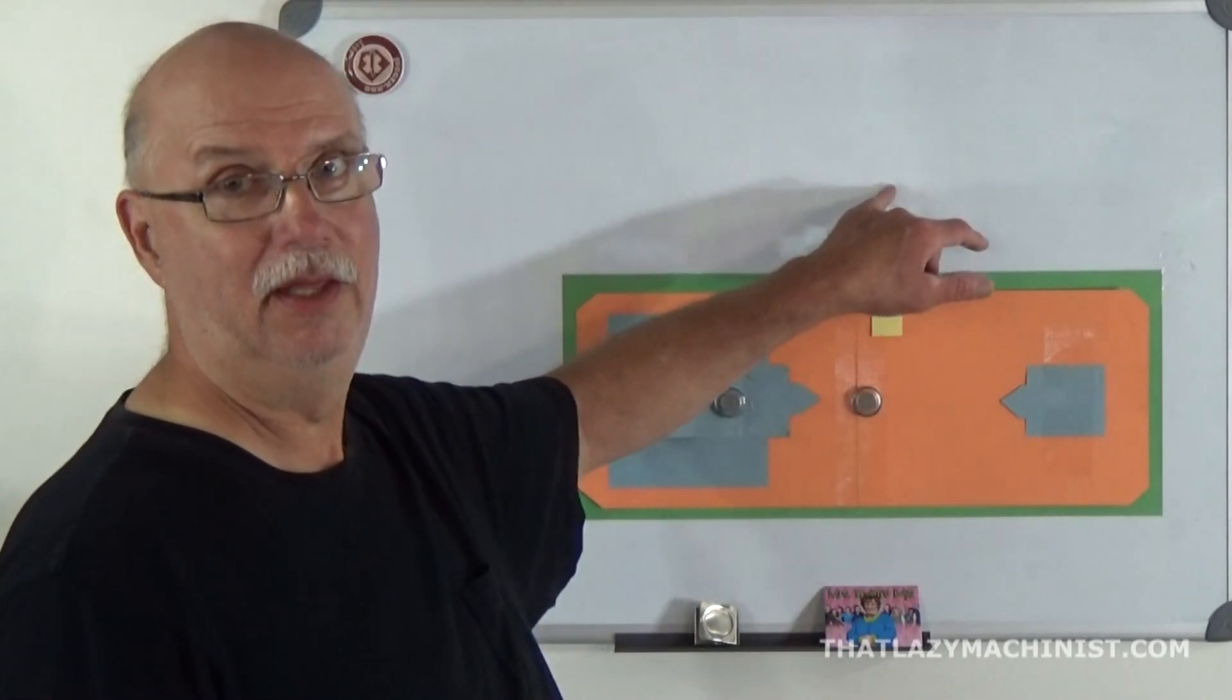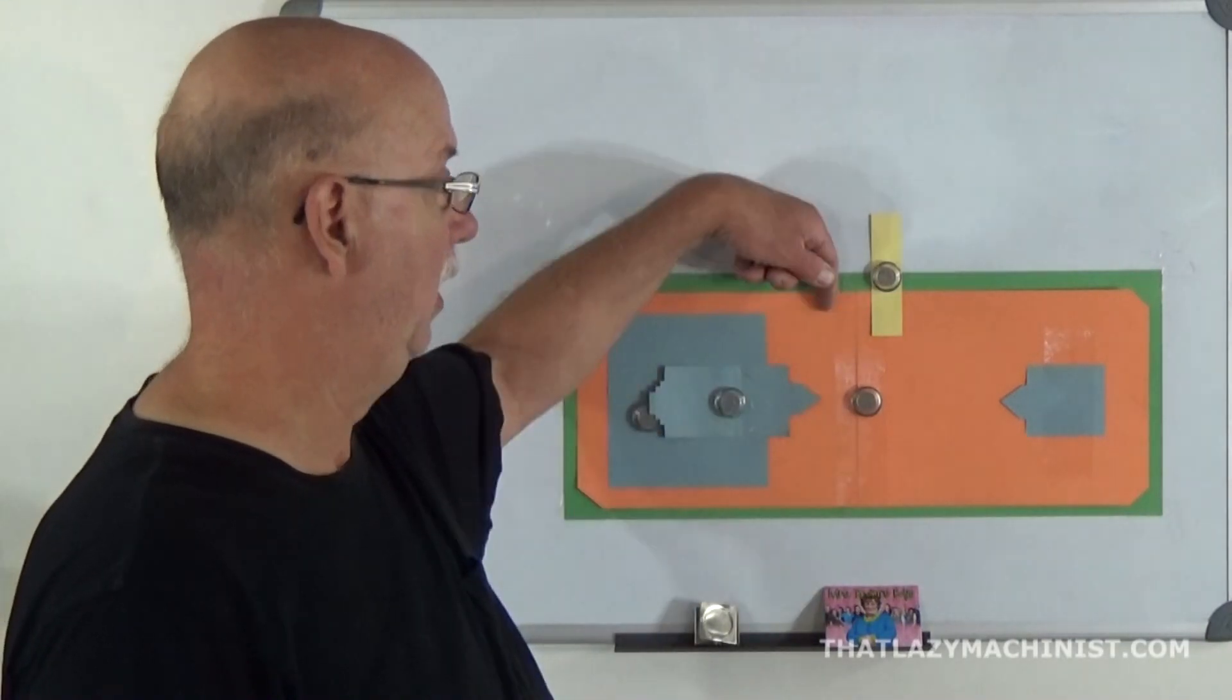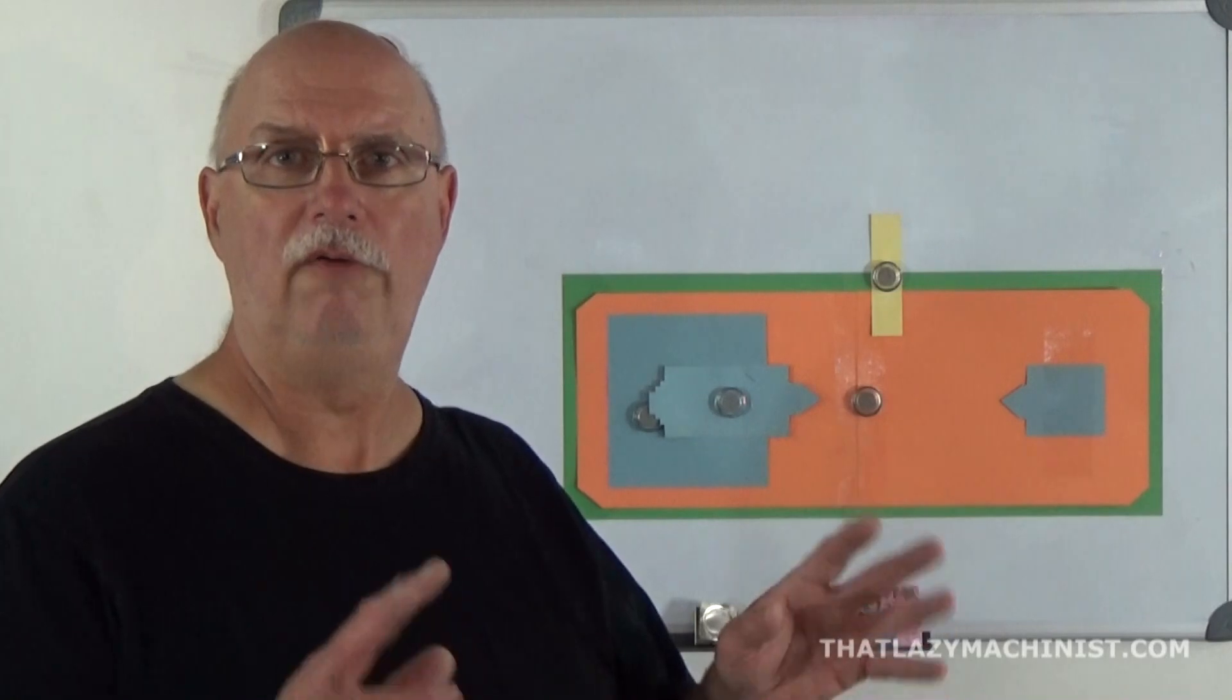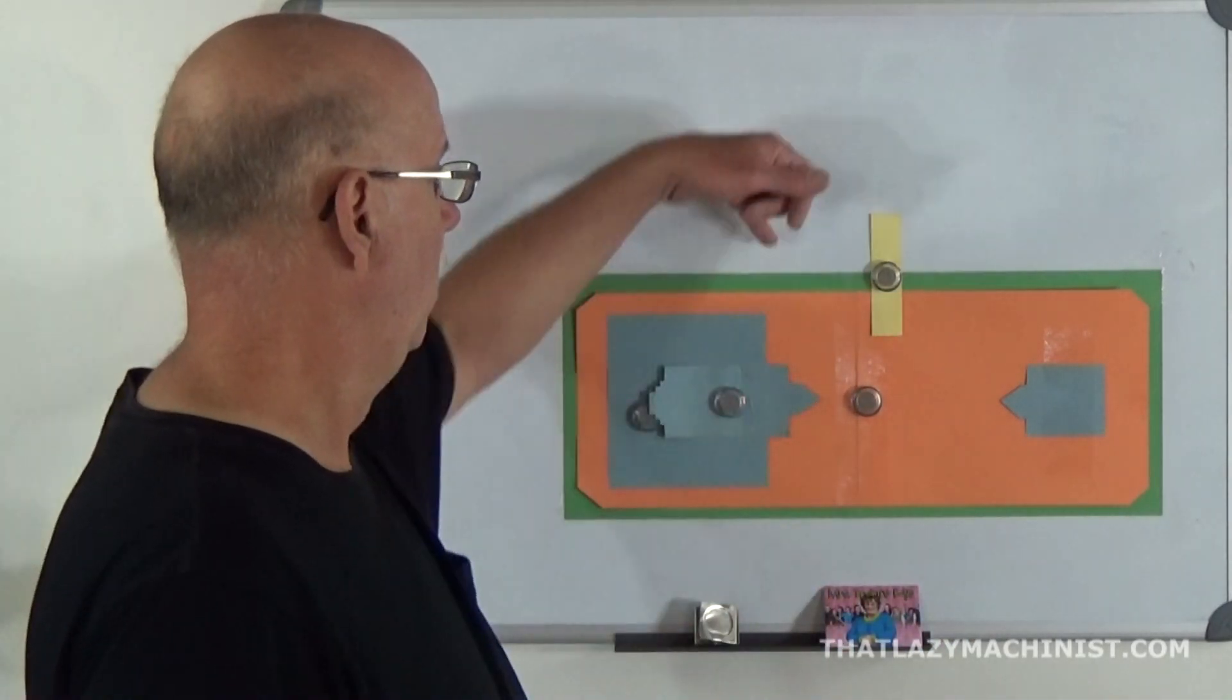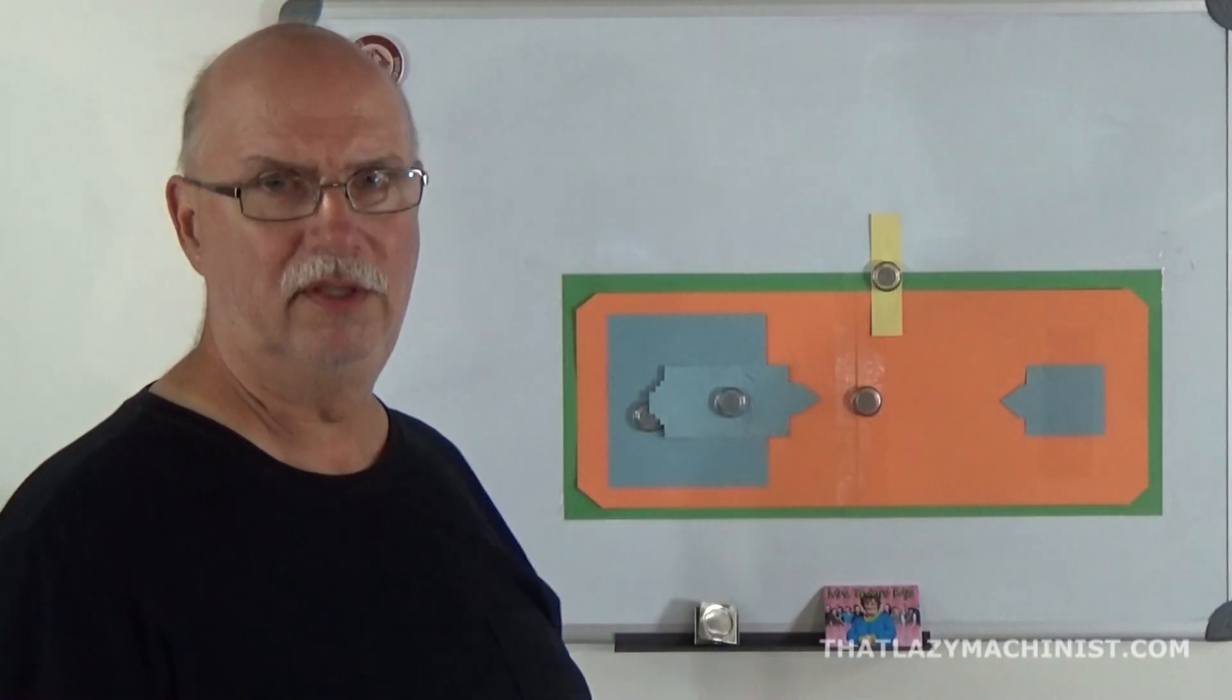We have the workhead, we have the lower table, the upper table, we have the tailstock, and we have the headstock. Of those five components, two aren't adjustable. The lower table and the tailstock. What does that mean?